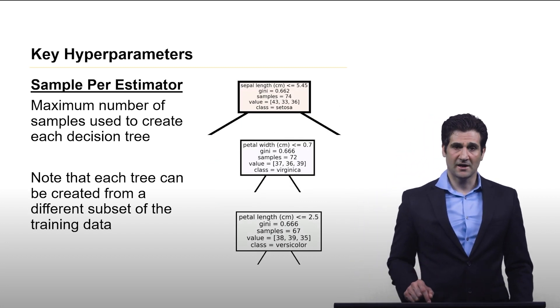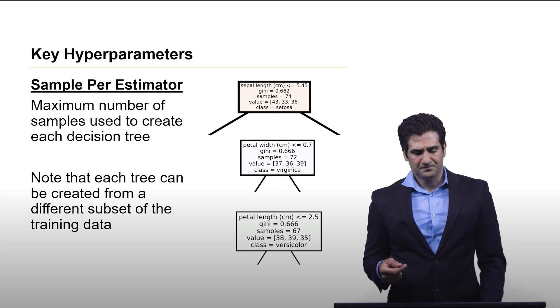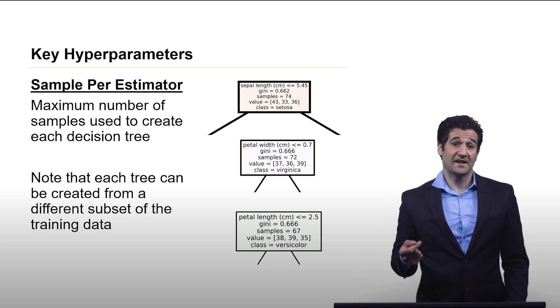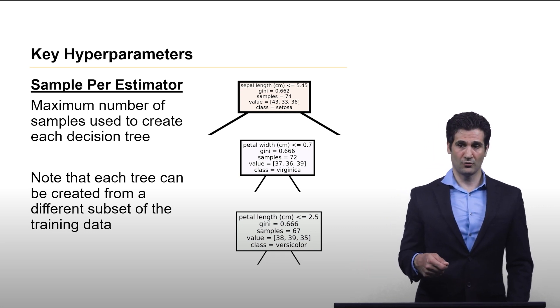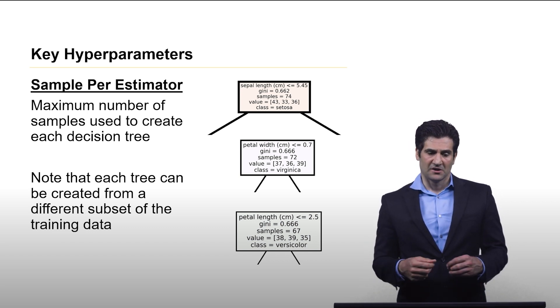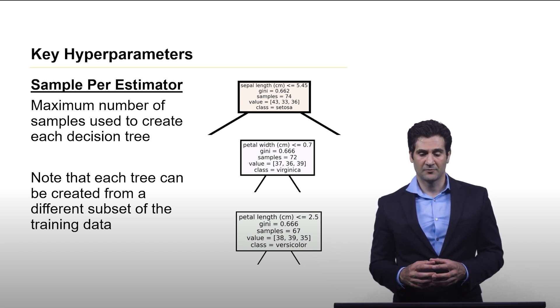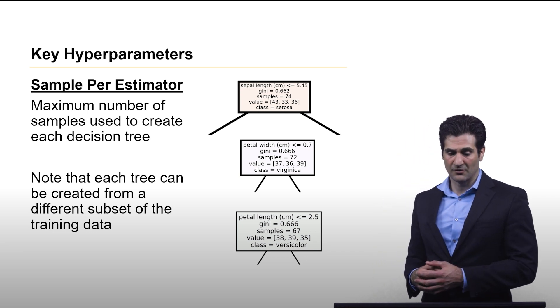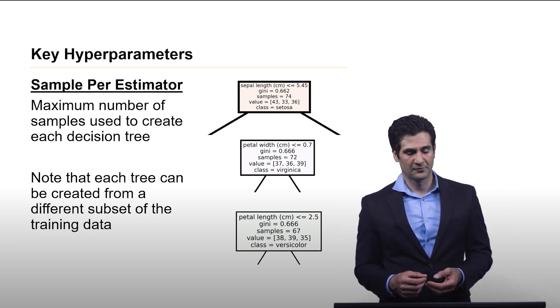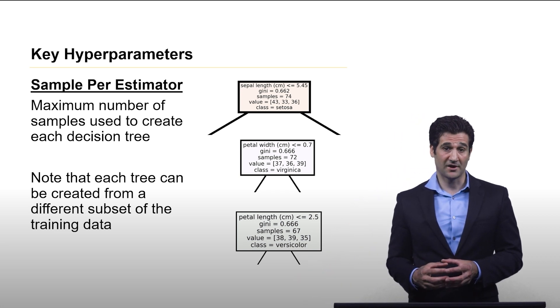The next is the number of samples per estimator. What's interesting here is that each tree is taking a subsample of the training data. It's not using all of it. This is one of the ways that gives us diversity in the trees. In fact, it is not even going to be the case that all the trees are going to be using the same amount of data. As you can see here, these are the root node for a couple of the different trees, and all of them are starting with a different amount of samples. This is okay and we would expect this because we want some level of diversity in the trees.